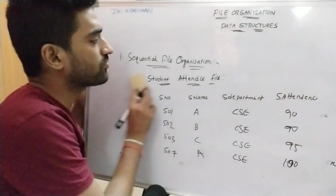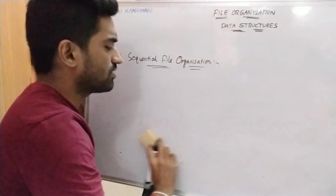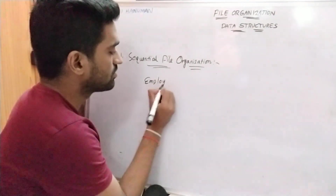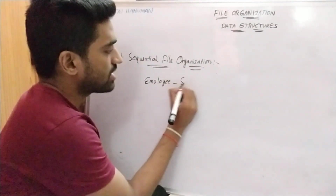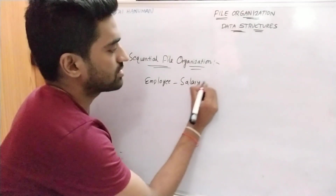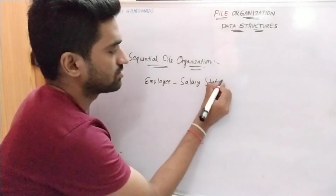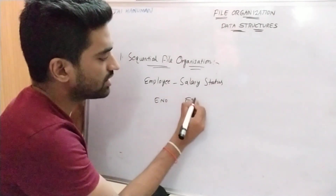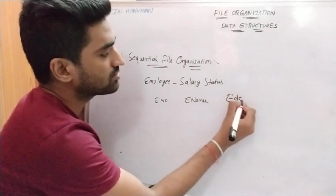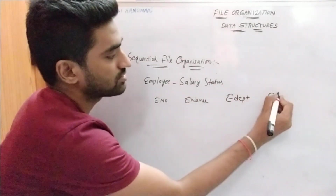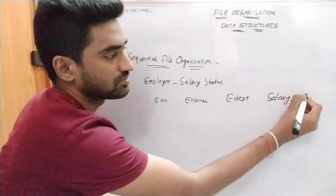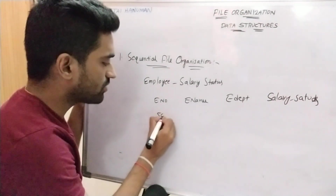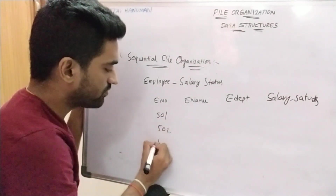For another example, consider an employee salary status file organization. The employee salary status file contains: employee number, employee name, employee department, salary status, and paid or not status. For suppose: employees 501, 502, 503, 504.